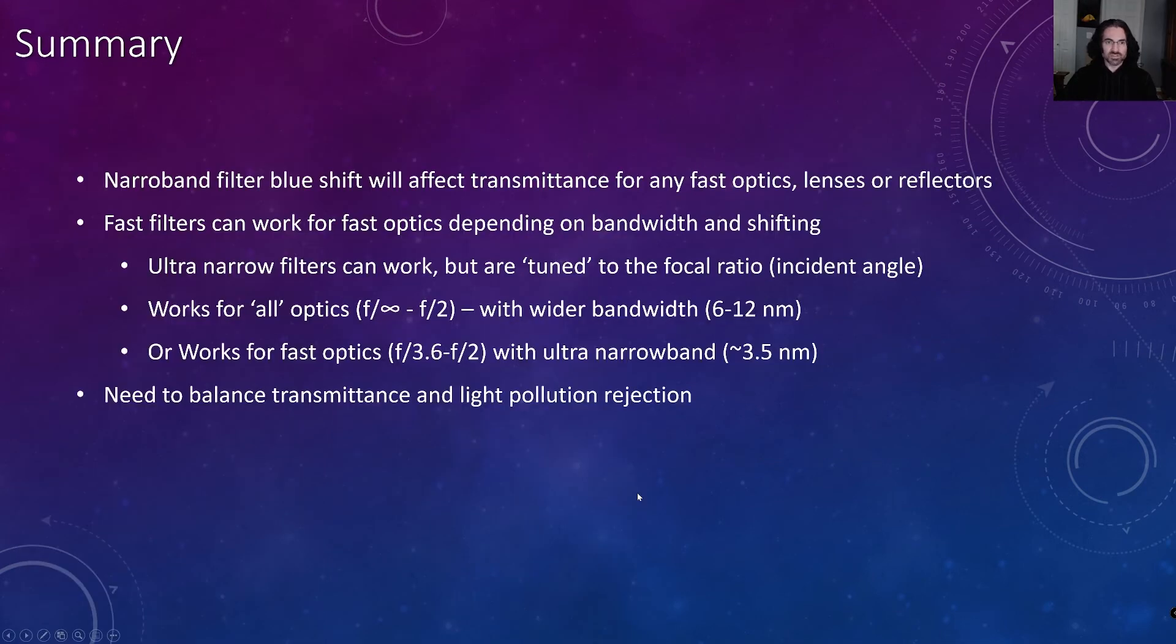So in summary, narrow band filter blue shift will affect the transmittance for any fast optics, whether it's lenses or reflectors with central obstructions. These fast filters can work for fast optics depending on the bandwidth of the filter and how the manufacturer has pre-shifted that particular filter. These ultra narrow filters can work, but they need to be tuned to the focal ratio, namely the incident angles that are involved. You can have filters that work for all optics from F infinity down to F2. Those will be wider bandwidth filters on the order of 6 to 12 nanometers that I've already talked about, such as what the Max FR filters by Astronomik provide. Or you can have filters that specifically work on fast optics from F3.6 to F2 with ultra narrow band characteristics such as the 3.5 nanometer bandwidth filters that I was describing, but recognizing that those won't work on your higher focal ratio optics. You're going to have to balance transmittance and light pollution rejection and find what's going to work best for your system.